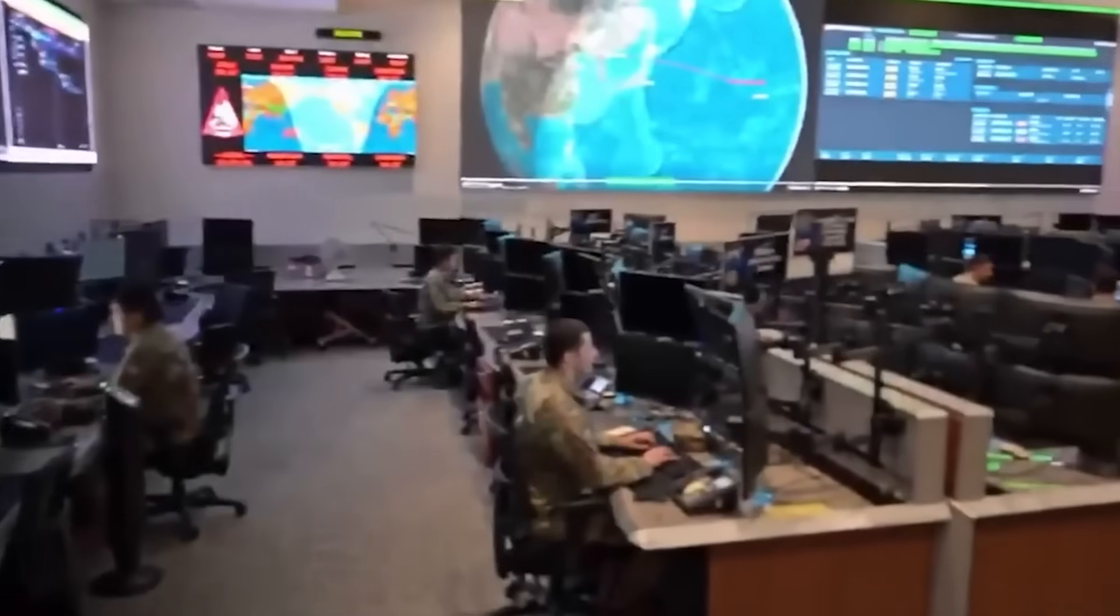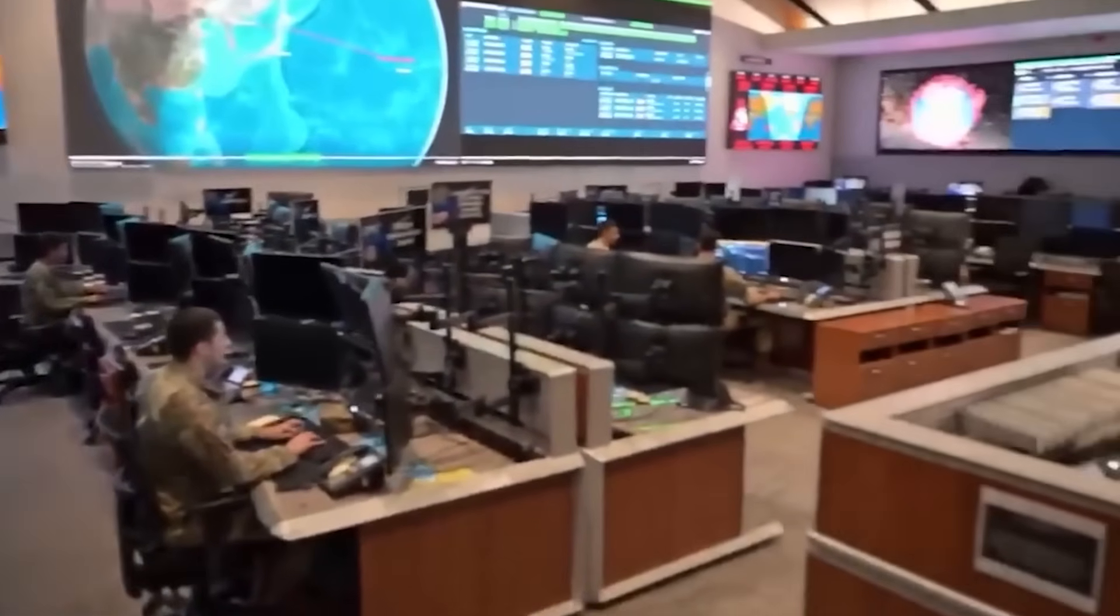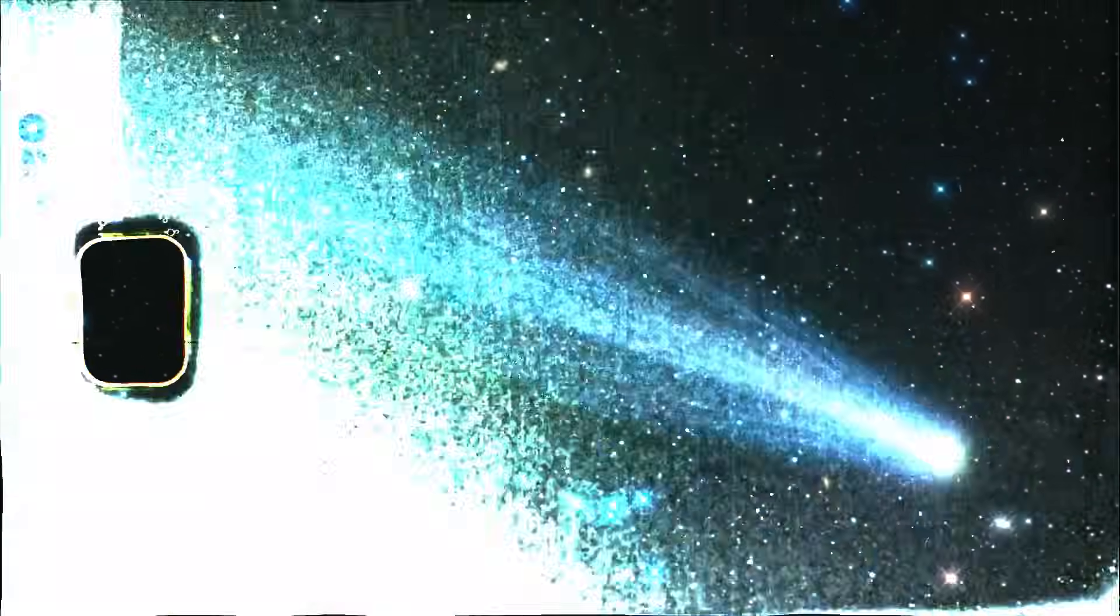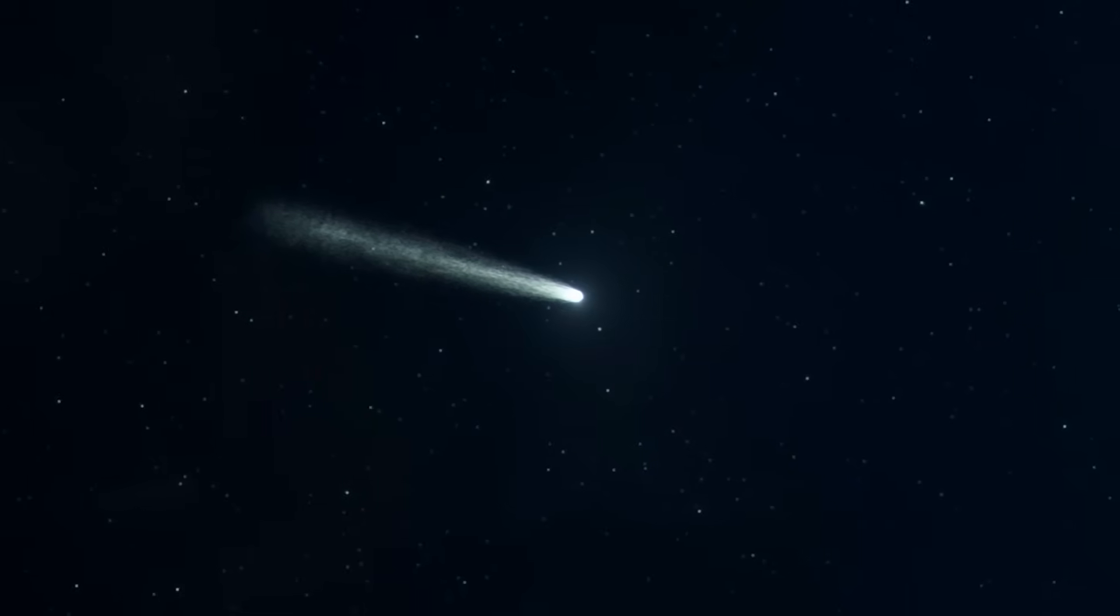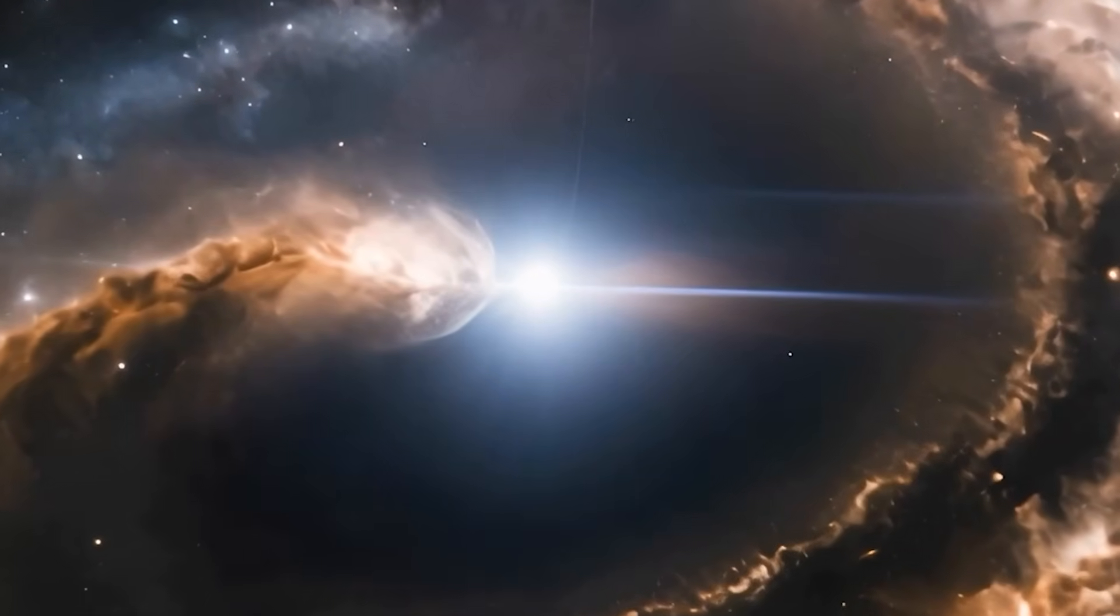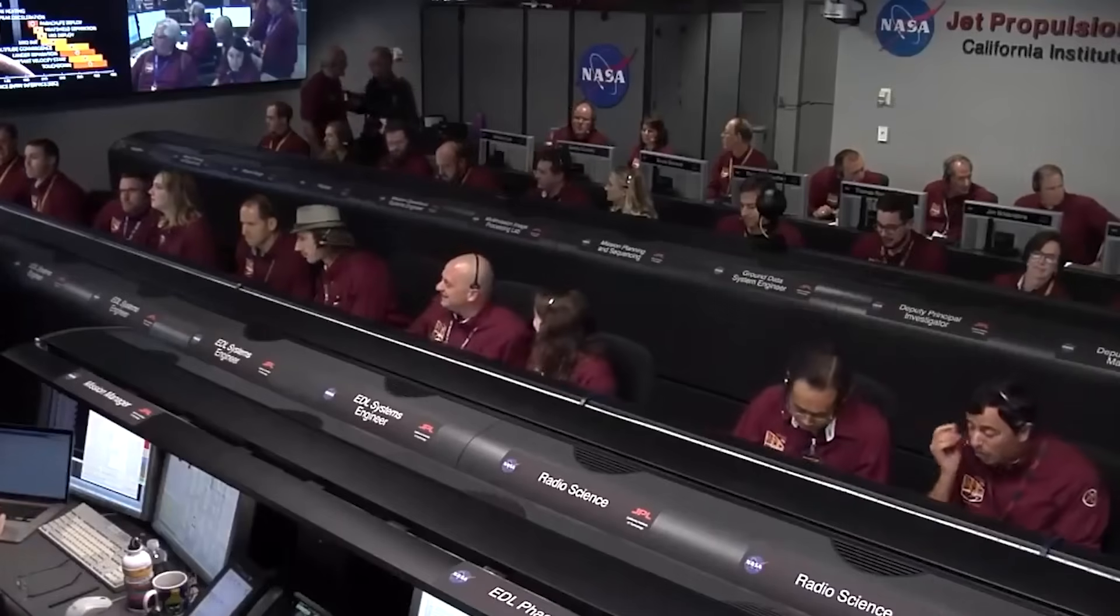It's like we live on a tiny, isolated island and have only just invented a fishing net. We cast it into the endless ocean for the first time and pulled out this bizarre, glowing creature we have no name for. It tells us almost nothing about the true diversity of life in the ocean, but it proves one thing for certain. The ocean is full of wonders we can't even imagine. We were just lucky enough to catch this one.